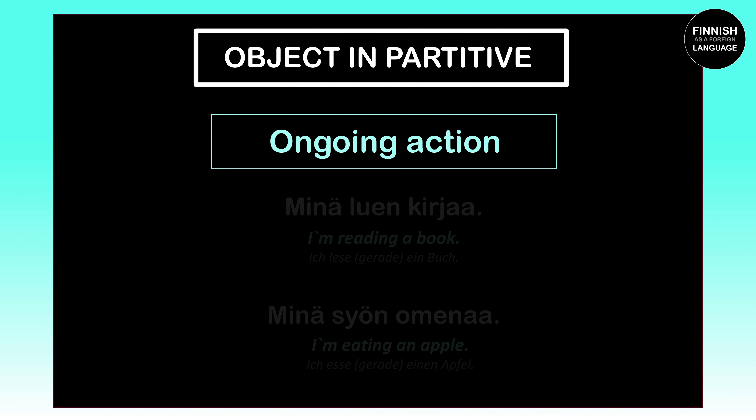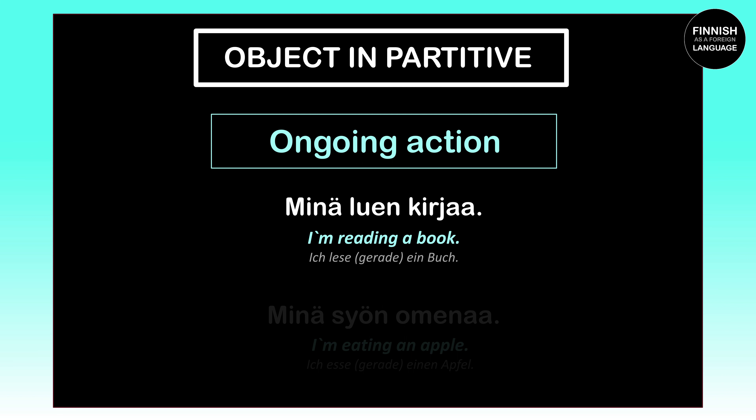The partitive is also used when we're talking about an ongoing action. Here's one example: 'Minä luen kirjaa' means 'I'm reading a book.' Our object here is the book, which is 'kirja' in Finnish. What this sentence tells us is that I'm reading the book right now in this very moment — it doesn't necessarily mean I'm going to finish the whole book. That is why 'kirja' has to stand in the partitive case, becoming 'kirjaa.'